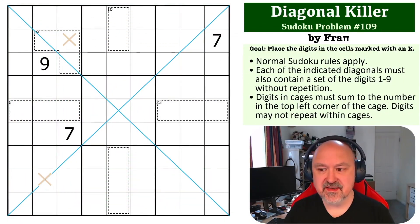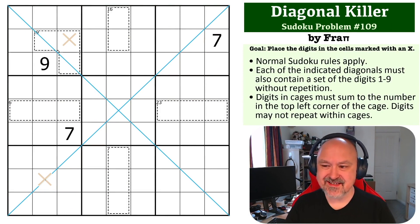Hey everyone, this is Bremster and this is Puzzle 109 in the Sudoku Problems series. This is a Diagonal Killer problem by Frappi. Frappi has submitted a lot of different problems to this series, so thank you for that. The way this works is you need to place the digits into the cells marked with an X.